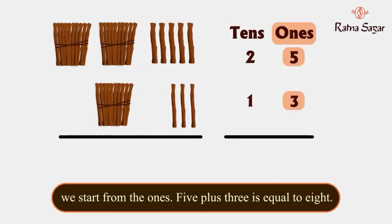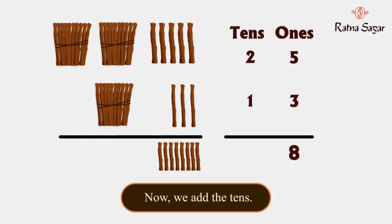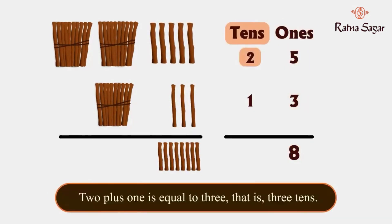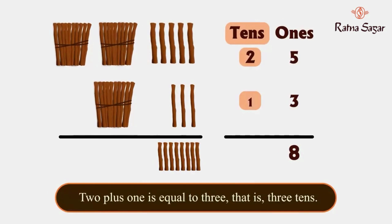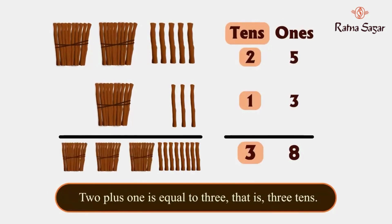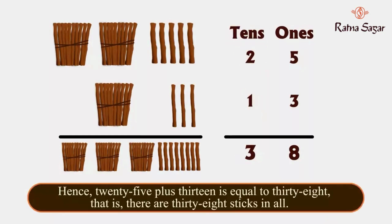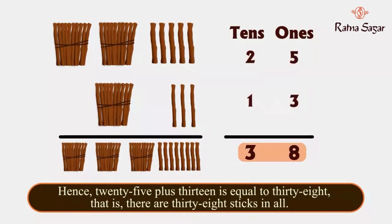Five plus three is equal to eight. Now we add the tens: two plus one is equal to three, that is three tens. Hence, 25 plus 13 is equal to 38. That is, there are 38 sticks in all.